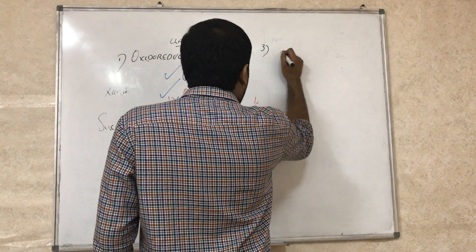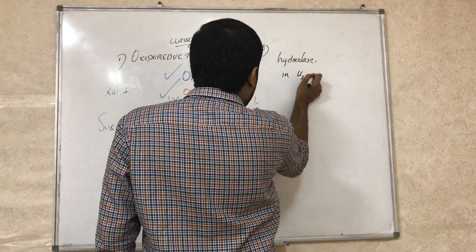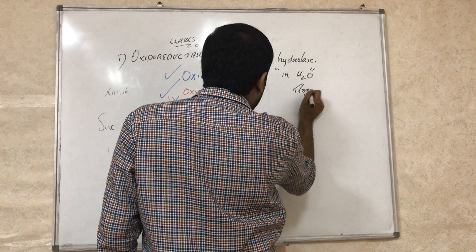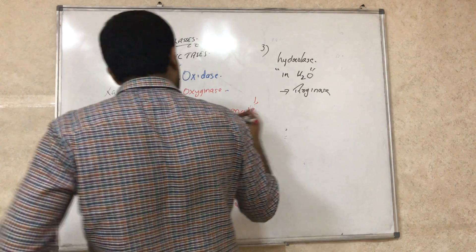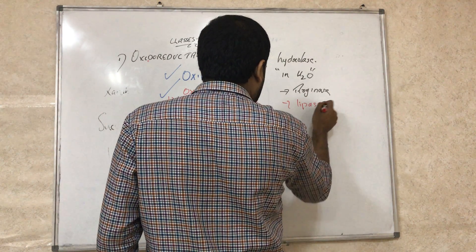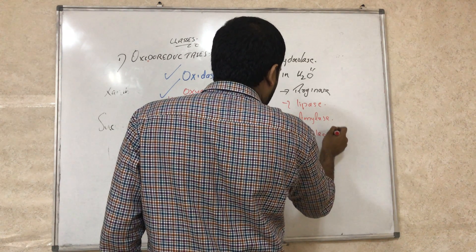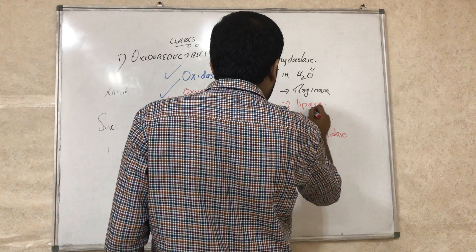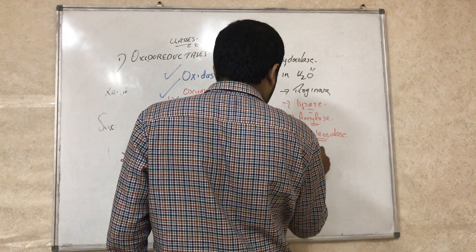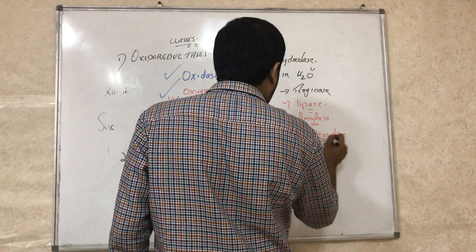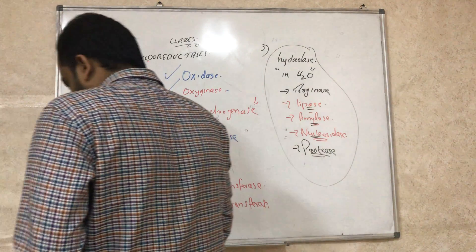The next class is hydrolases. They break bonds in the presence of water. Examples include arginase from the urea cycle, lipase, amylase, nucleosidase, and protease.